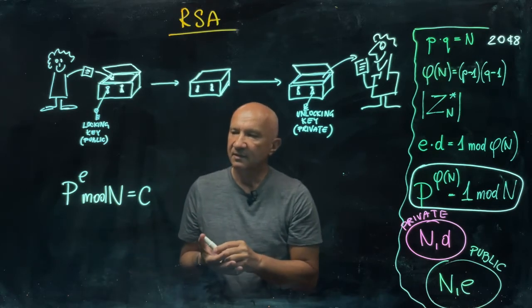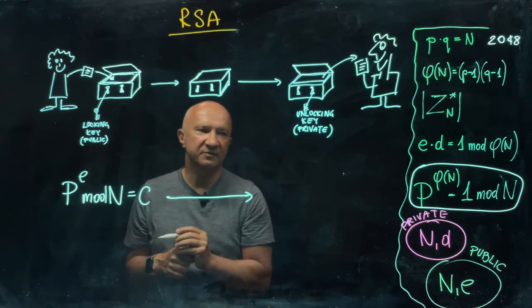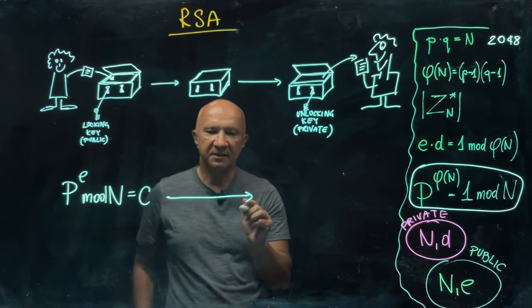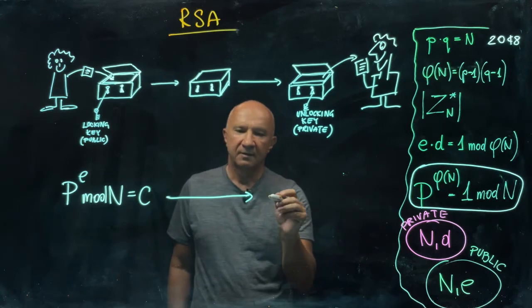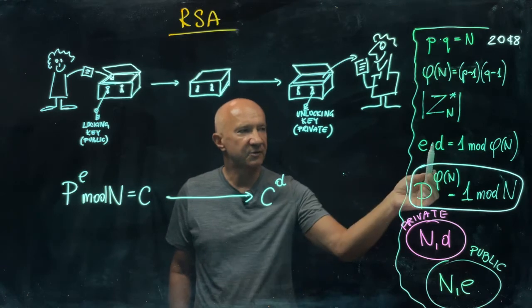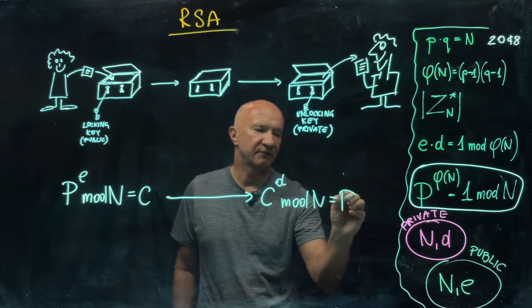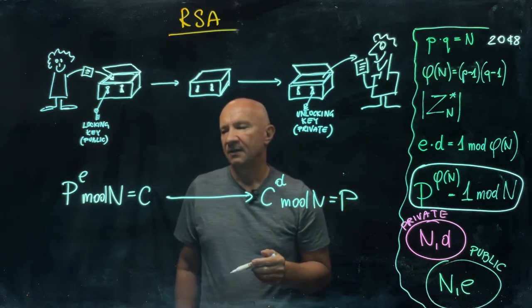Now, you can see that this cryptogram then being in transit to Bob is decrypted by taking the cryptogram, raising it to the power d, so decrypting exponent, mod n, that will give you the plain text.